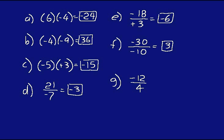And on G, different signs. On the bottom, you don't have a plus sign, but you know that's a positive 4 because it's understood that if there's no sign, it's a positive. So the answer is negative 3.